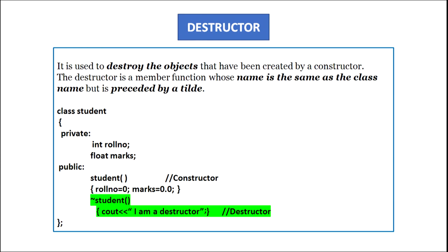Destructor. A destructor is a special member function of a class used to destroy the objects that have been created by a constructor. The destructor is a member function whose name is the same as that of the class and is preceded by a tilde sign (~). Taking the example of class student, in the public section we declare a constructor student assigning default values 0 to roll number and 0.0 to marks. The destructor is declared with '~student()' and in its body we display 'I am a destructor'. Destructors should also be in the public section because they are invoked by the object.